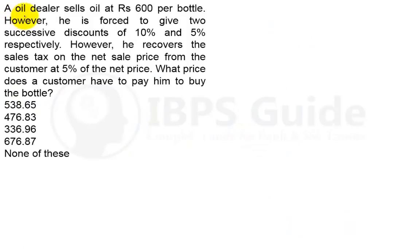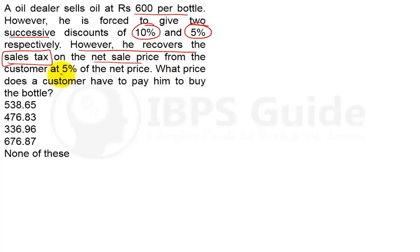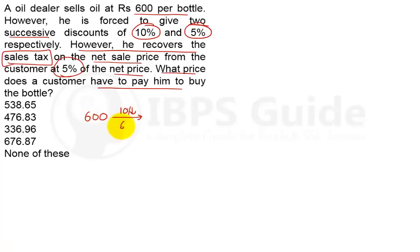Question number 5: An oil dealer sells oil at rupees 600 per bottle. However, he is forced to give two successive discounts of 10% and 5% respectively. He also recovers sales tax on the net sale price from the customer at 5% of the net sale price. What price does the customer have to pay? Starting at 600: 10% discount = 60, so price becomes 540 rupees. Then 5% of 540 = 27, so after second discount: 540 − 27 = 513 rupees.